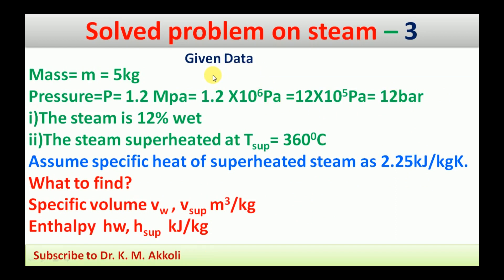The given data: mass m = 5 kg, pressure P = 1.2 MPa, which can be written as 1.2 × 10⁶ Pa, or 12 × 10⁵ Pa. Since 1 × 10⁵ Pa equals 1 bar, this becomes 12 bar.